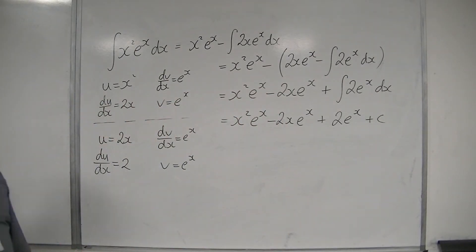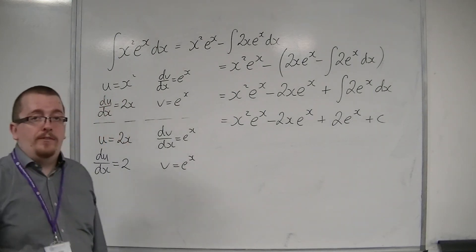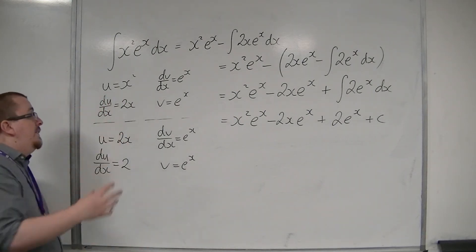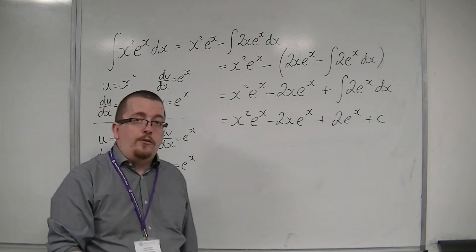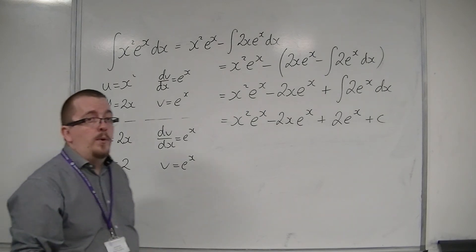And that is how you could potentially use integration by parts twice. So x squared e to the x, or x squared sine x, or x squared cos x, all of these will use integration by parts twice.